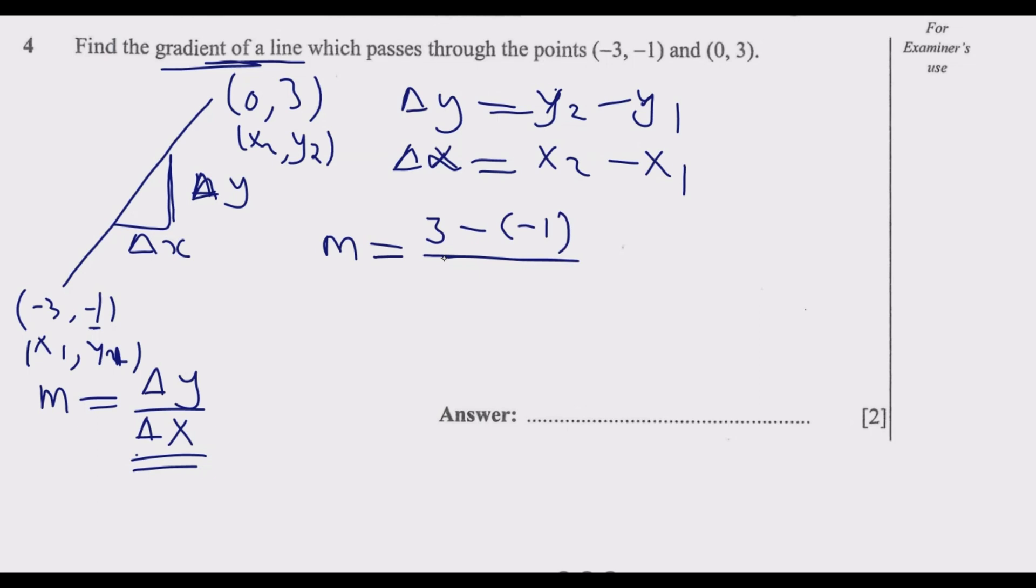What is x2? x2 is 0, because remember these are the second points, these are the first point. This is x1, this is y1. So it will be 0 minus -3, which is x1.